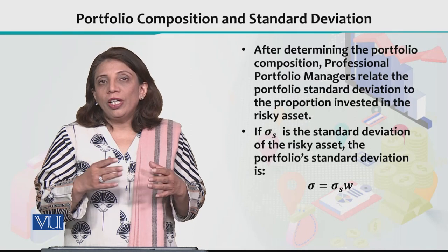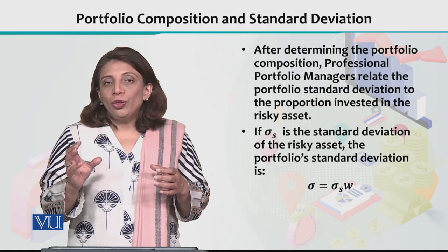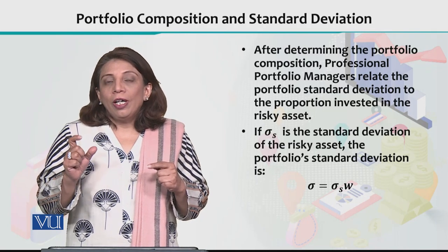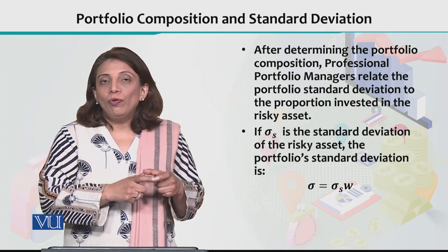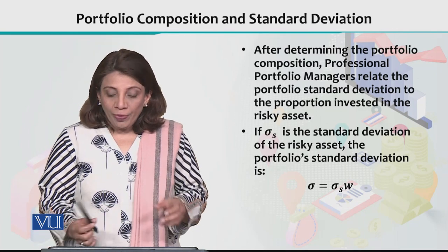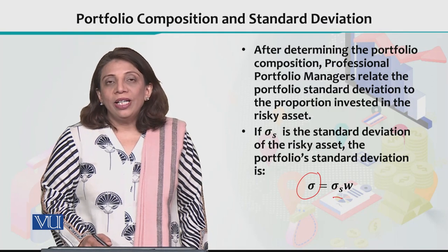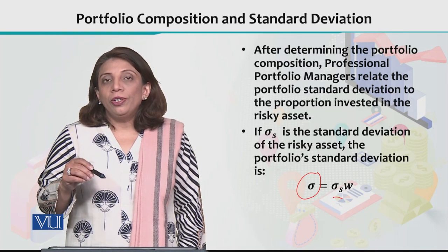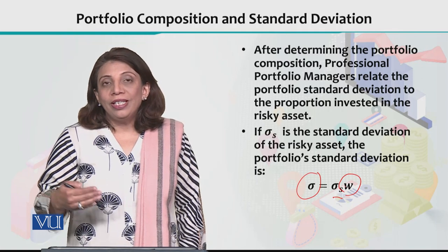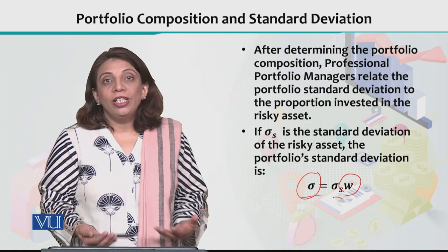Basically, the portfolio return is composed of a proportion W invested in the risky asset. If we represent the portfolio standard deviation by Sigma, and Sigma S as the standard deviation of the return from the risky asset, then the portfolio standard deviation equals W times Sigma S. The risk-free asset contributes zero to portfolio standard deviation since there is no variation in its return.